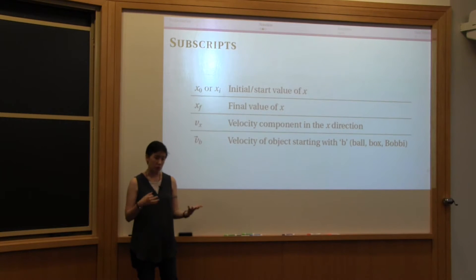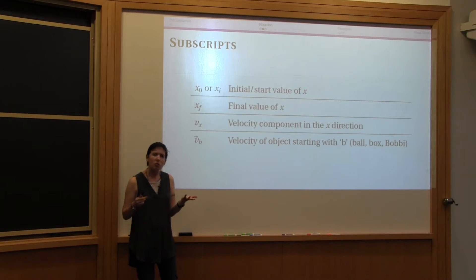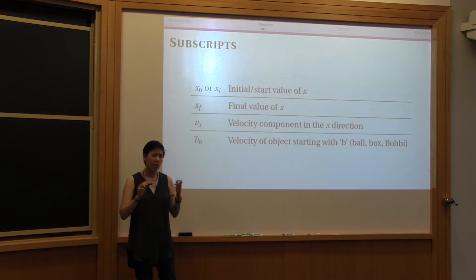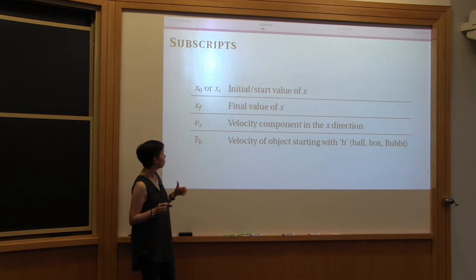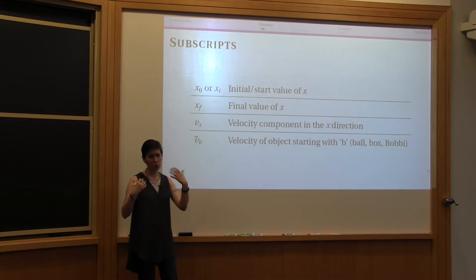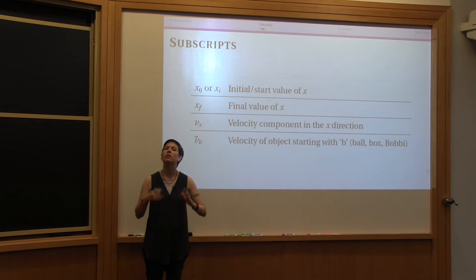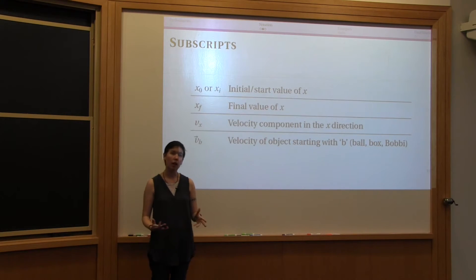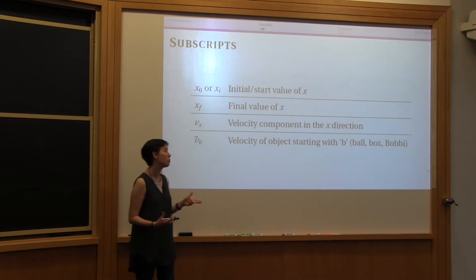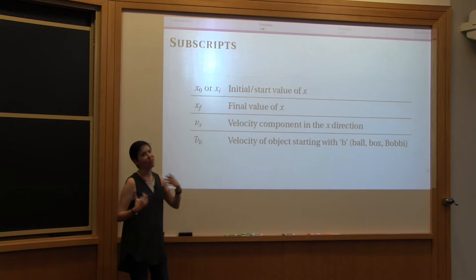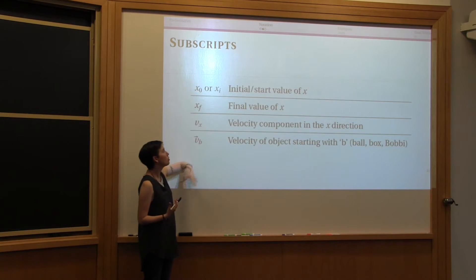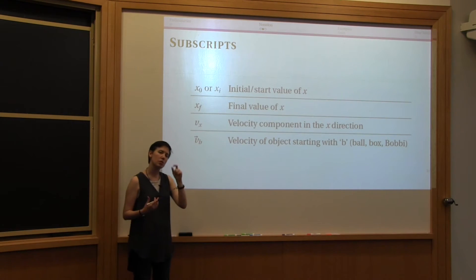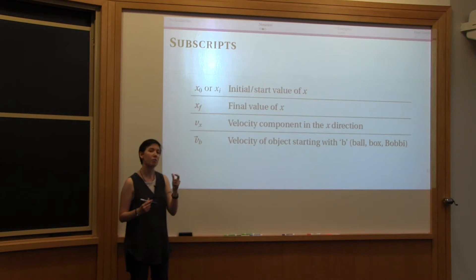I might switch between 0 and i. One reason you might not want to use i is if later you have a 1, since i and 1 can look pretty similar. So denoting the initial value of a quantity comes up a lot, and we use a subscript to do that. The second thing, related to this, is denoting a final value, which we'll frequently use a subscript of f for.